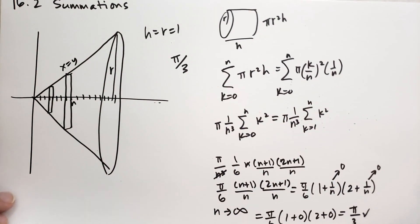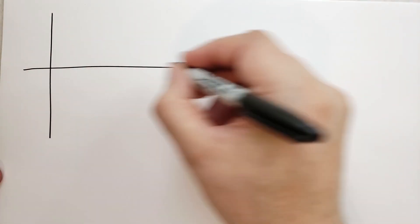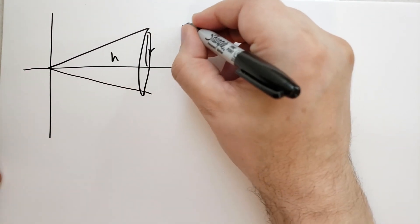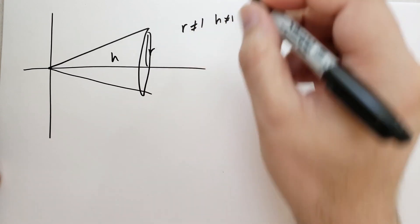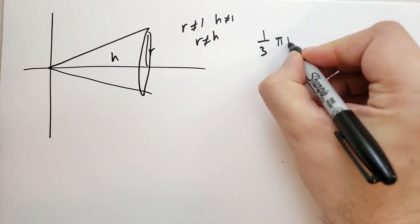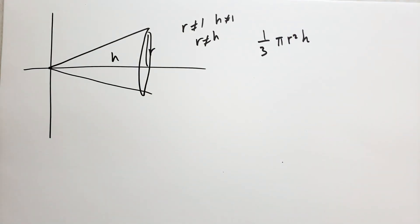Suppose we wanted to find the volume of an arbitrary cone with arbitrary r and h. It has a radius and a height, and the radius may not equal 1 and the height may not equal 1, and definitely the radius and height may not be equal. We're going to find that the volume is one third pi r squared h. The technique to do this is to repeat what we just did — that's a great exercise left for you as exercise one — but I'm going to show you a different way using mixed dilations.